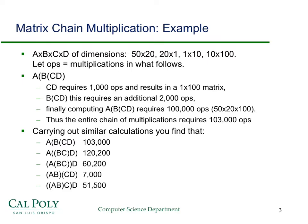If you carry out similar operations for the different ways to associate the matrices, you'll see you get these results. Notice in this example we have a big advantage to doing it the most efficient way — namely, only 7,000 multiplications as opposed to 120,000 operations.